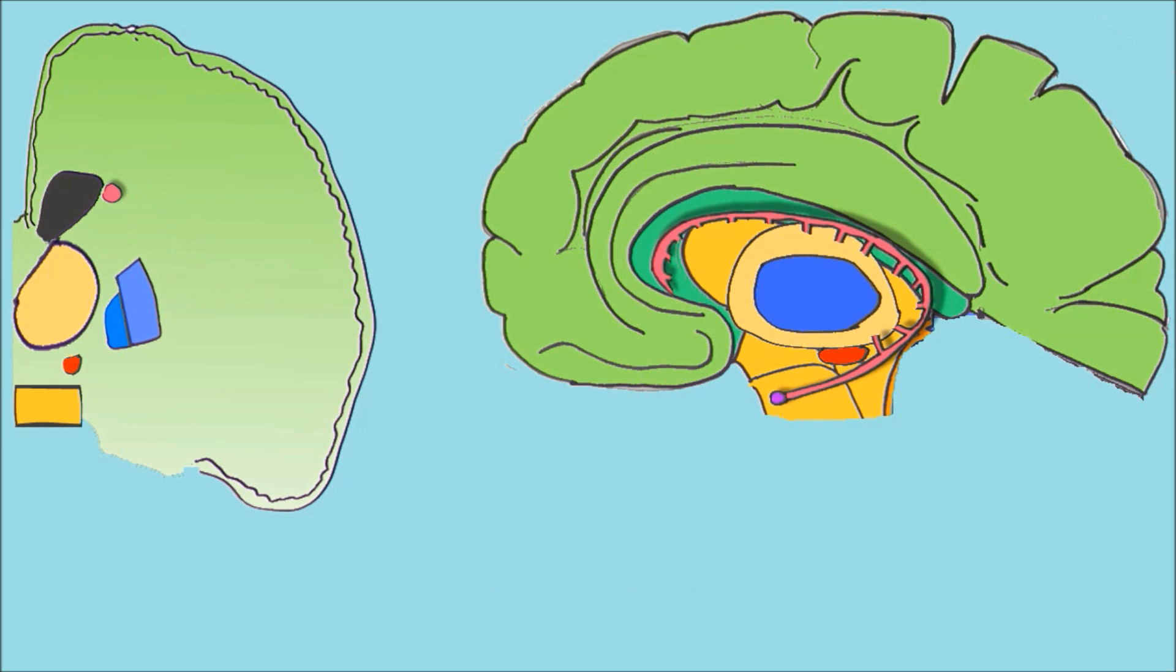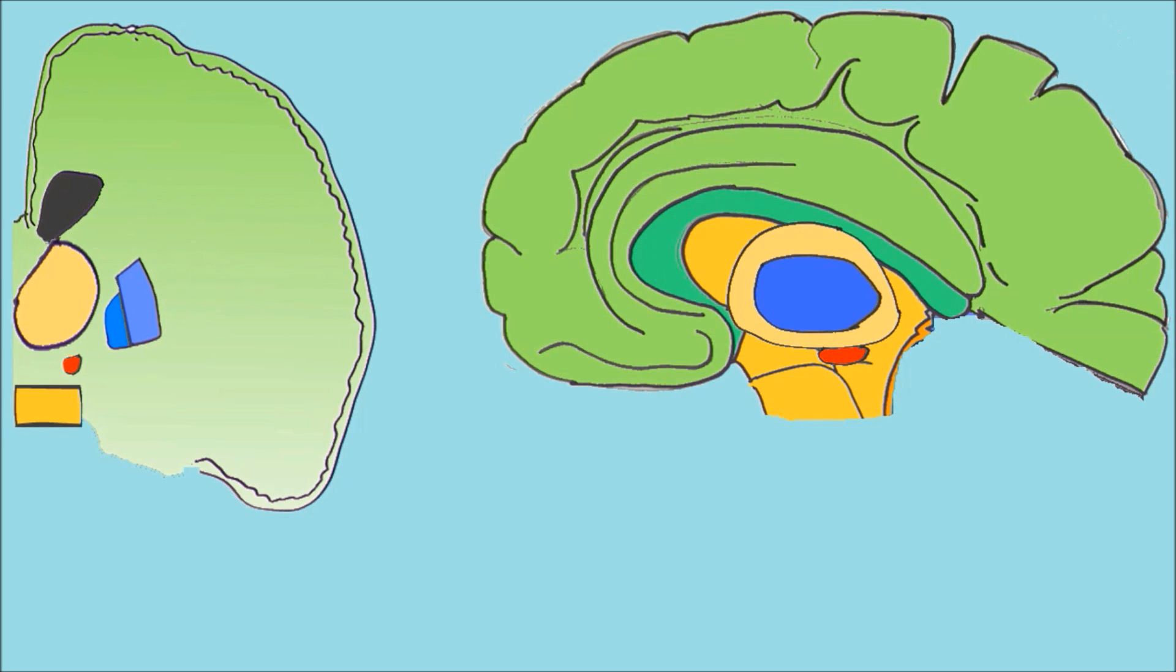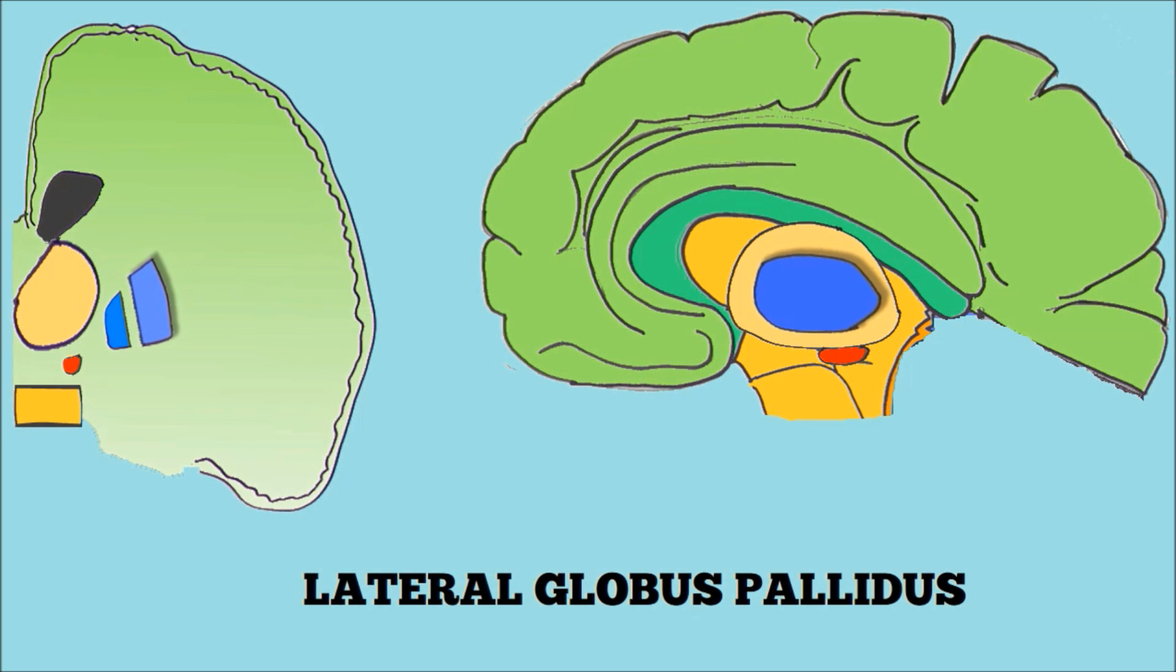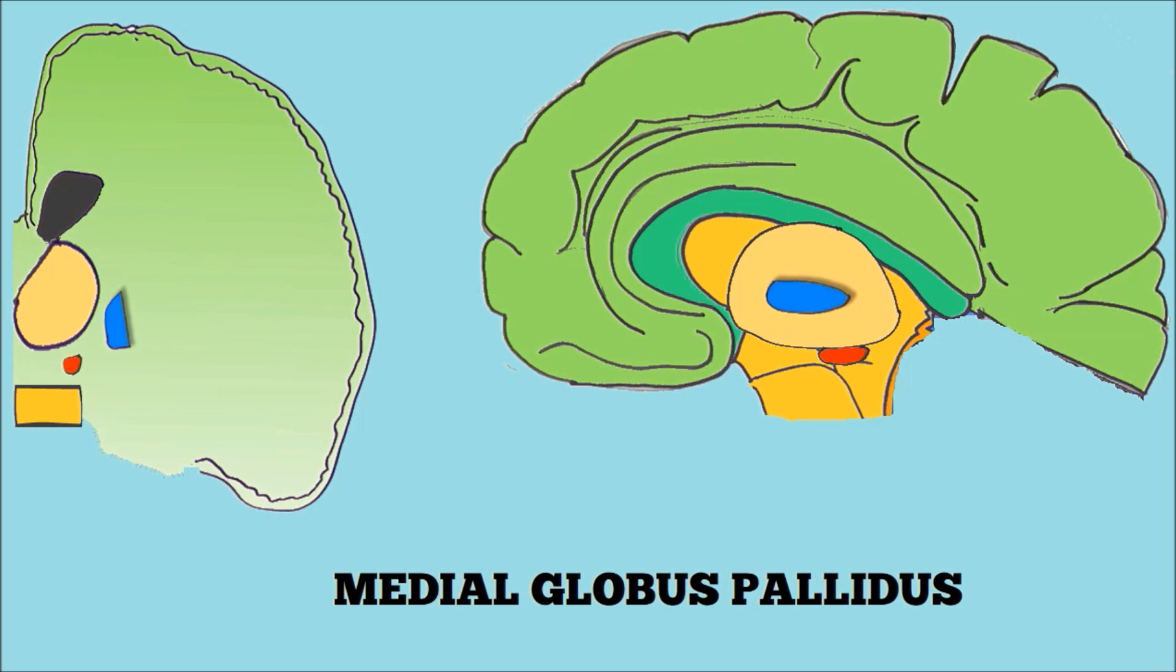So let's remove the putamen and now the caudate, and we can see this blue structure underneath. This is the globus pallidus. The globus pallidus regulates voluntary movement and is primarily inhibitory in its actions. It has two parts: the lateral globus pallidus and the medial globus pallidus. If we take the putamen plus the lateral and medial globus pallidus, we get the lentiform nucleus.